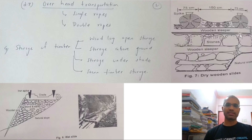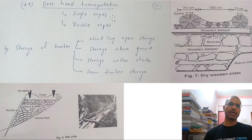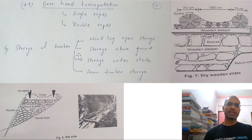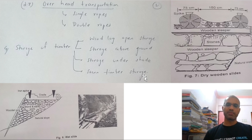Overhead transportation uses single ropes or double ropes to transfer timber from one place to another. For storage of timber, the types include: wood log open storage, storage above ground, storage under shade, and sawn timber storage. Just remember the names — these questions are hardly ever asked in the exam.